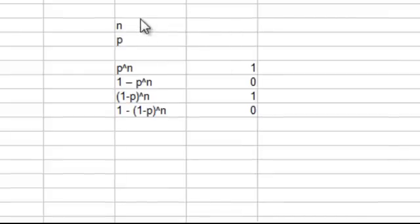So now I've set up a spreadsheet where I can input n, the number of engines, p, the probability that each engine succeeds, and then we'll calculate the four things we just talked about: p to the n, 1 minus p to the n, (1 minus p) to the n, and then 1 minus (1 minus p) to the n. And then the calculations will show up here.